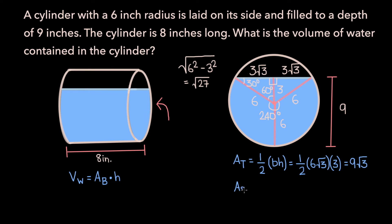And so the area of the sector is two-thirds pi r squared, where r is equal to 6. So two-thirds times pi times 6 squared, which is 36, which is equal to 24 pi.